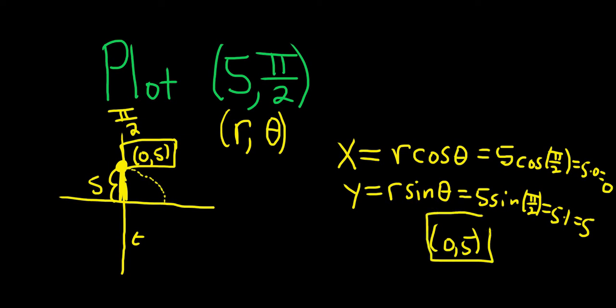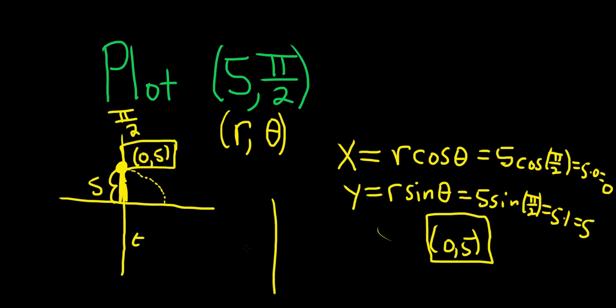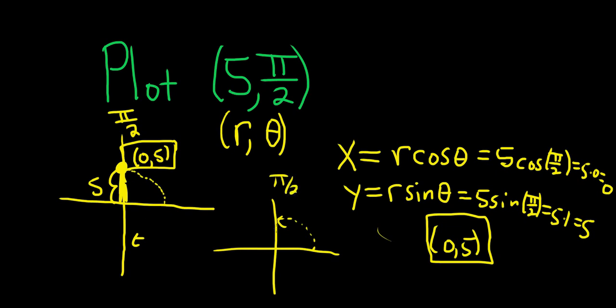Again, in this case, it wasn't really necessary to go through all of this. Because when you plot your polar coordinate, you first travel theta, which puts you right here at pi over 2. Then you travel a distance of 5 towards that terminal point. That point is 0, 5 because this distance here is 5.